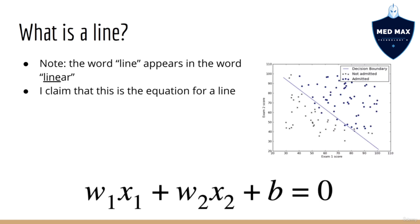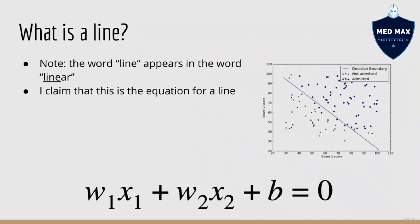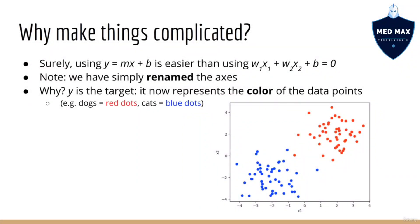As a side note, why do we call this linear classification? Well, you will notice that the word line actually appears in the word linear. This surprises many people, so don't worry if you haven't noticed this before. Alright, so what's the equation for a line? I claim that a line can be expressed using the equation w1*x1 plus w2*x2 plus b equals 0. Now, at this point, you might sigh to yourself and say, gosh, why does lazy programmer have to make everything so complicated? I already know that the equation for a line is y equals mx plus b, so why do we have to use this more complicated looking equation, with w's and x1 and x2 and so on?